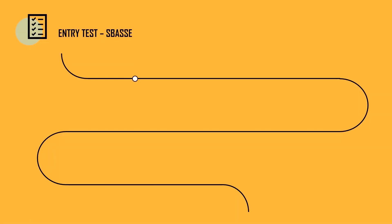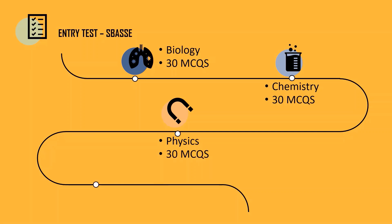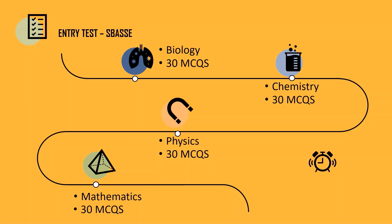As discussed in one of my previous videos, the timeline for this test is that you have a biology section with approximately 30 MCQs, a chemistry section with approximately 30 MCQs as well, a physics section with approximately 30 MCQs, and lastly, a mathematics section with almost 30 MCQs as well. The time allotted for this paper is 2 hours.